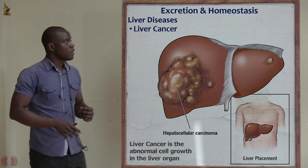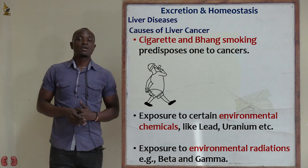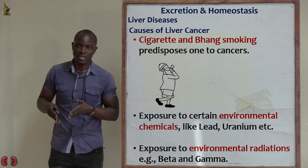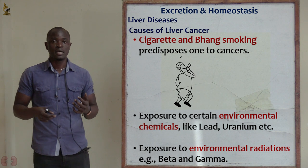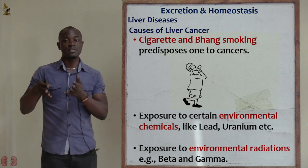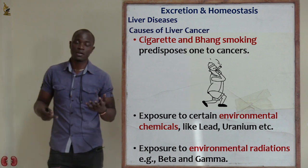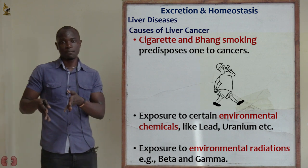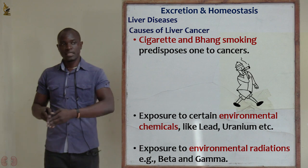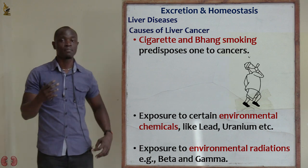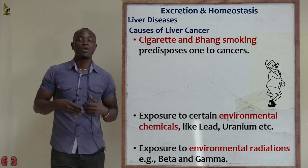The causes of hepatocellular carcinoma or liver cancer include: exposure to certain chemicals in the environment, for example cigarette smoking and bhang smoking. People who engage in smoking are at very high risk of this disease, as they intake many chemicals. It is also genetic — if someone in the family lineage had cancer, others in that lineage have a greater risk of developing the same or a different cancer.